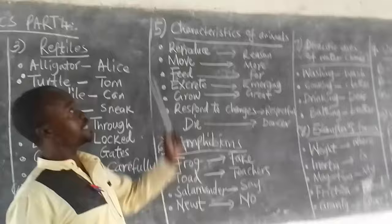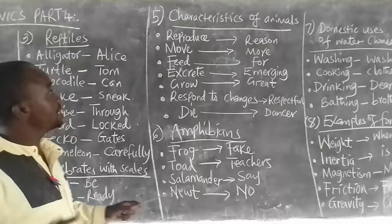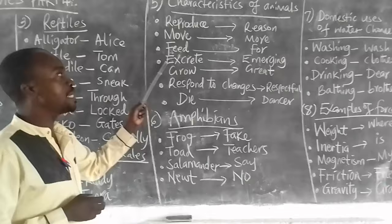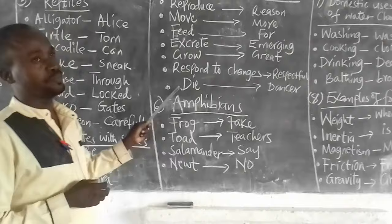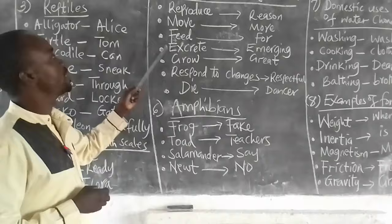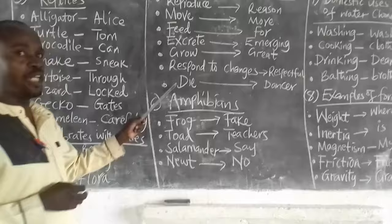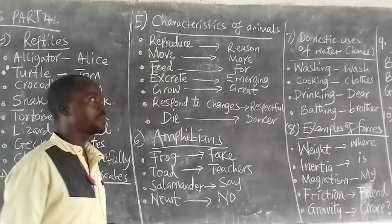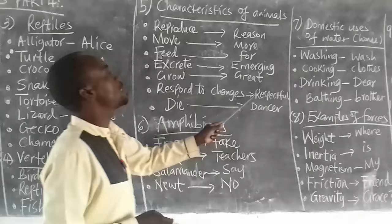Characteristics of animals. Animals reproduce, they move, they feed, they excrete, they grow, they respond to changes, and they die. Mnemonic: reason more for emerging great respectable dancer.